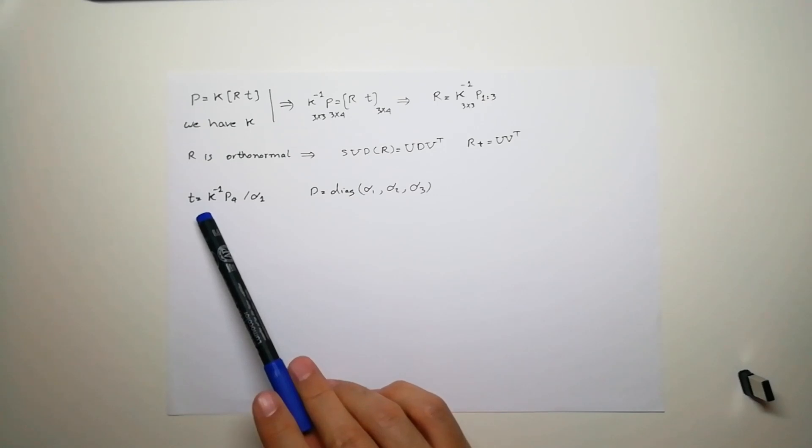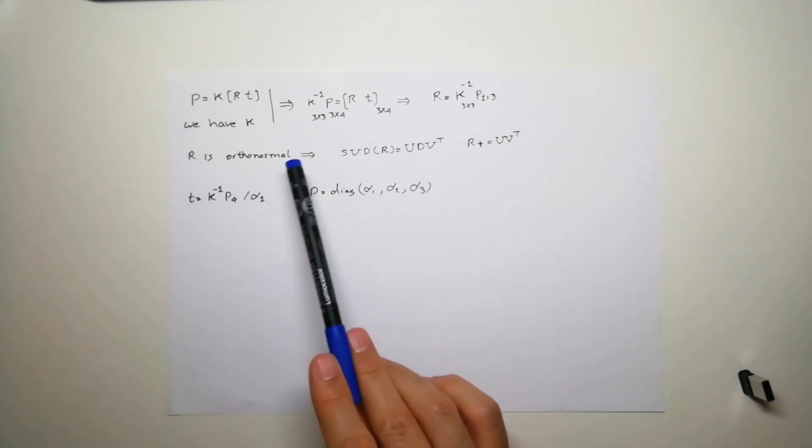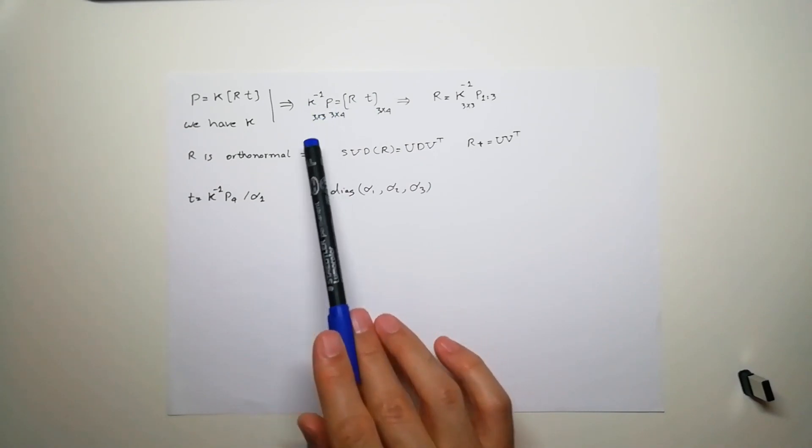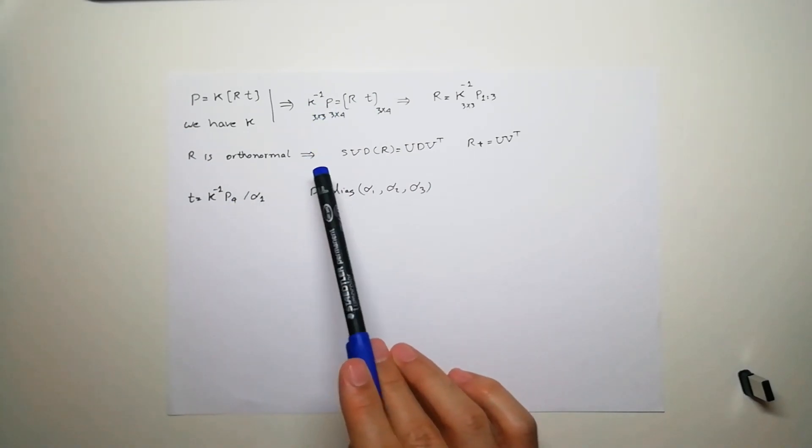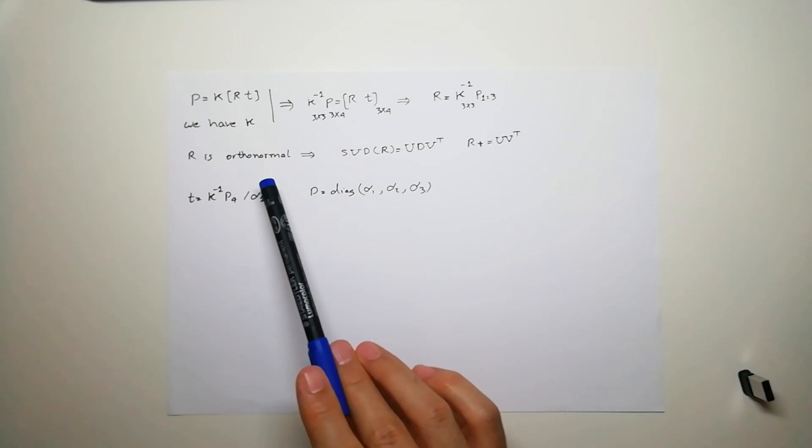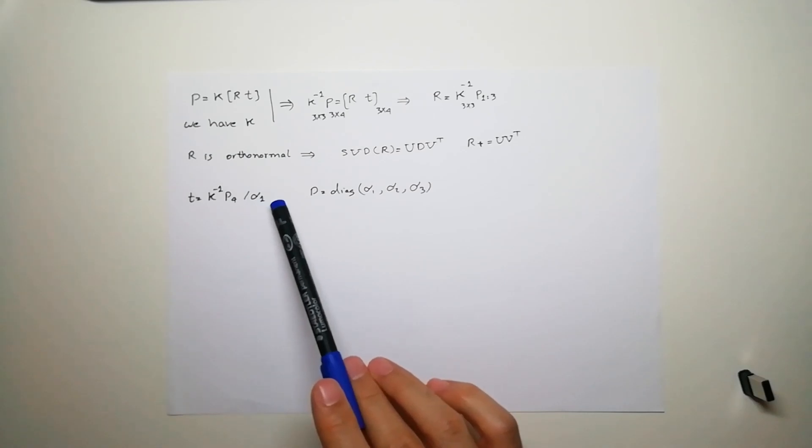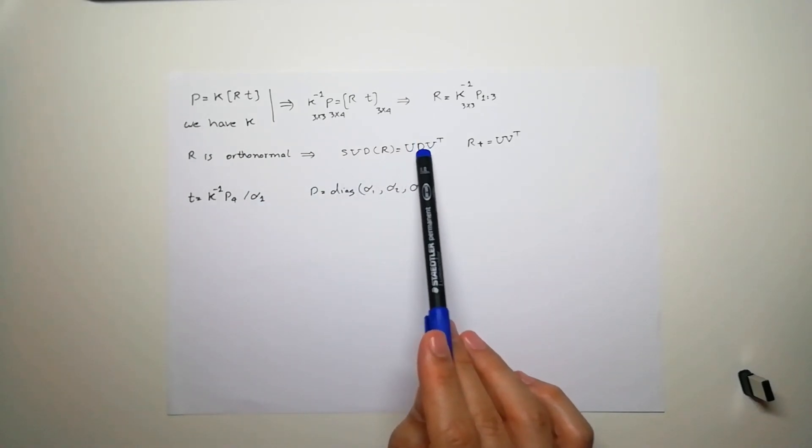For translation, as I said, the last column of K inverse multiplied by t, if you divide it by delta one, which delta one is the first eigenvalue on the SVD decomposition, it gives us the t.